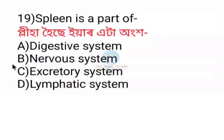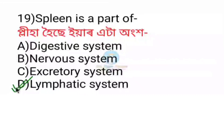Spleen is a part of what? Spleen is a part of the lymphatic system. Option D is correct: spleen is a part of the lymphatic system.